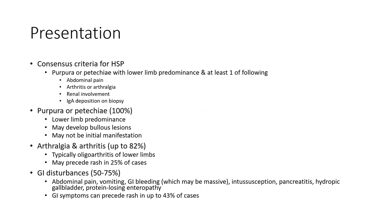Purpura may not be the initial manifestation. Arthritis or arthralgias occur in up to 82% of cases, typically oligoarthritis of the lower limbs, which may precede the rash in 25% of cases. GI disturbance occurs in 50 to 75% of cases, including abdominal pain, vomiting, and GI bleeding.